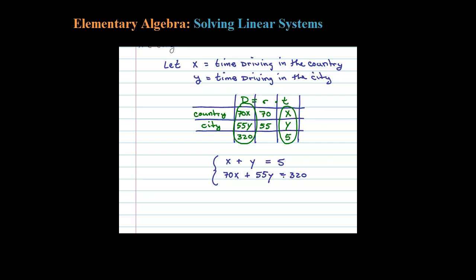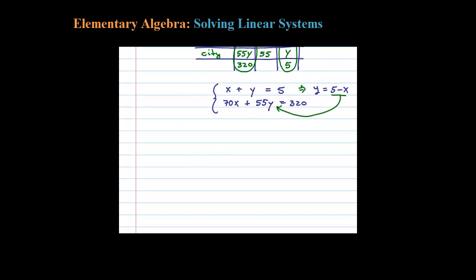So here we have a system of two linear equations and two variables. We can solve this. Since we solved the previous one using elimination, I think on this one we'll go ahead and solve it using substitution. So for this first equation we can say Y equals 5 minus X, or negative X plus 5. Subtract X on both sides.